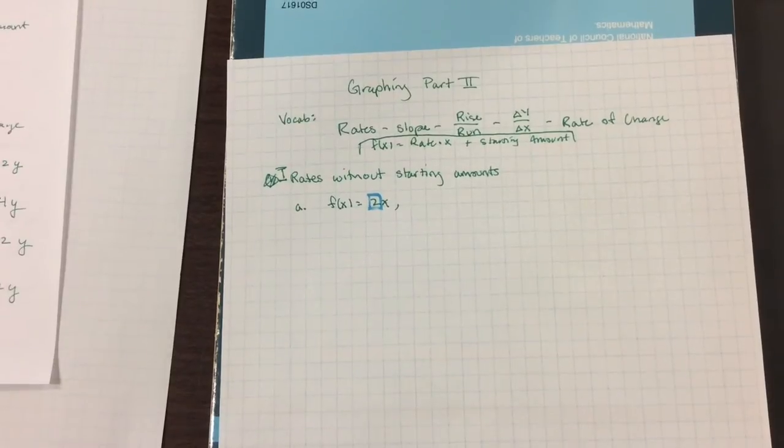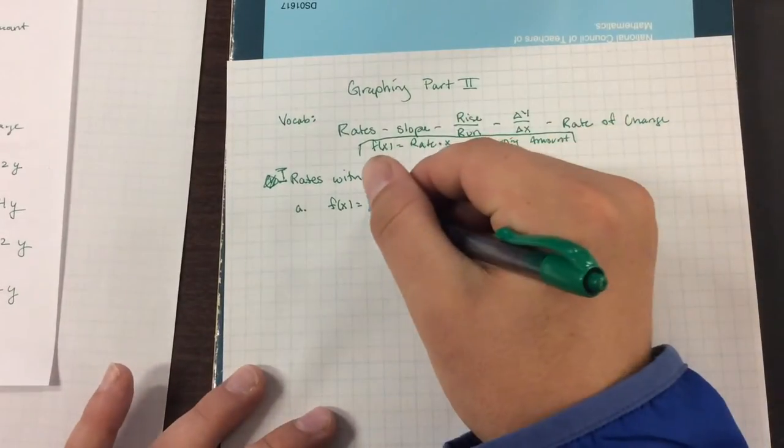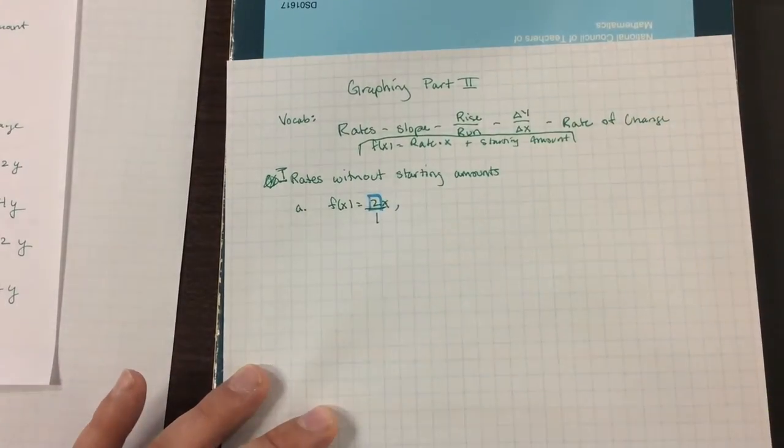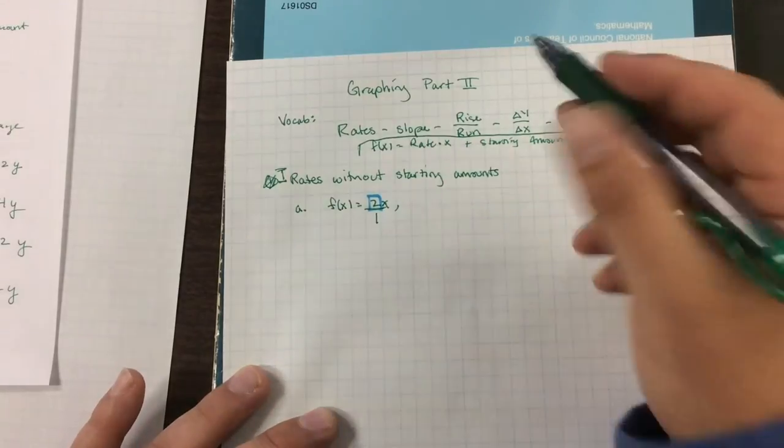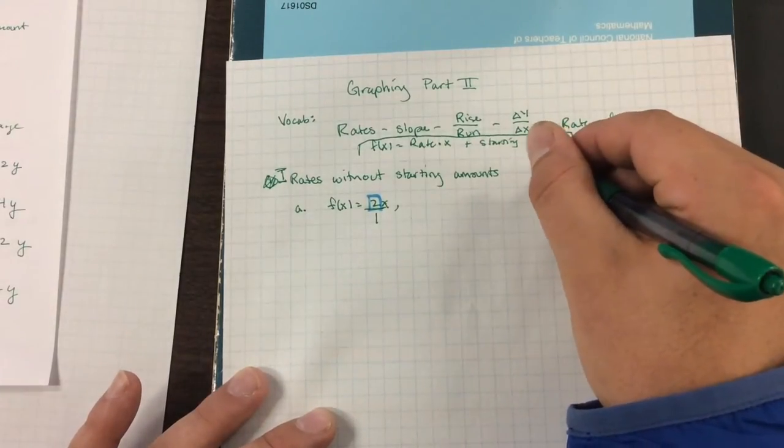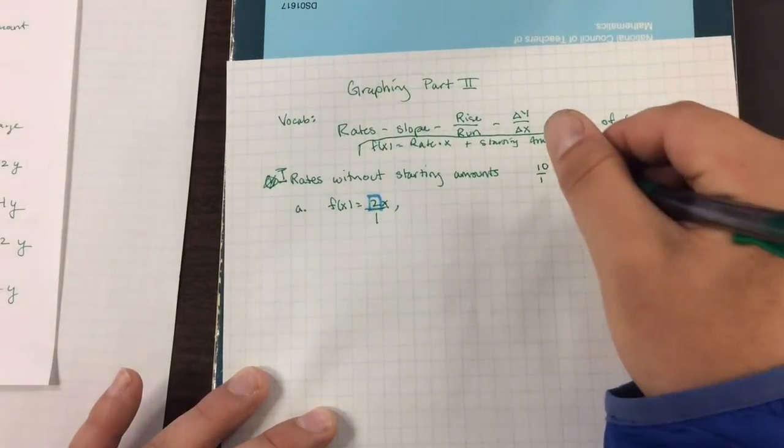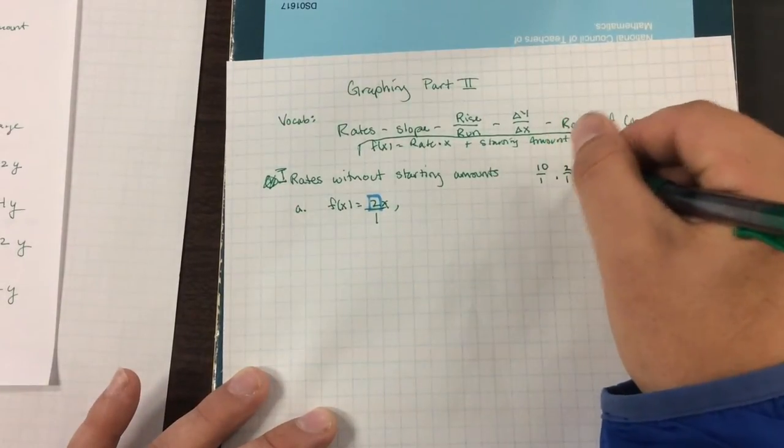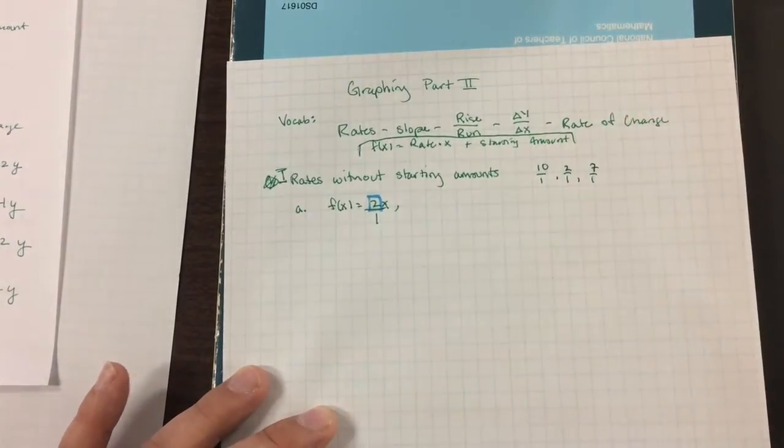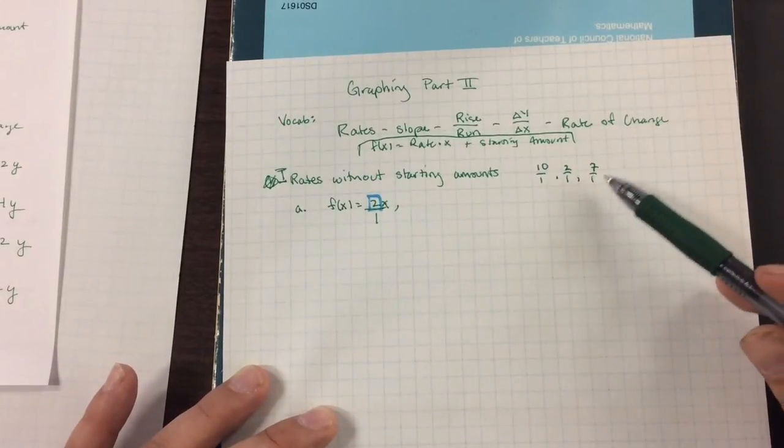If you have just a number, a whole number, it's secretly over 1. In fact, all numbers are secretly divided by 1, like 10 is really 10 over 1, or 2 is 2 over 1, or 7 is 7 over 1. We just commonly don't write the over 1.